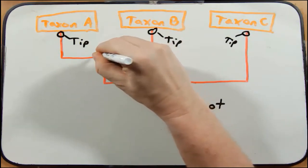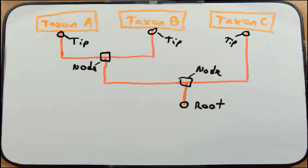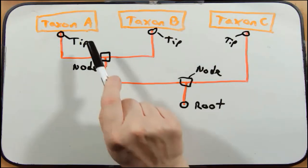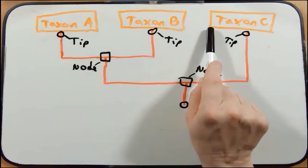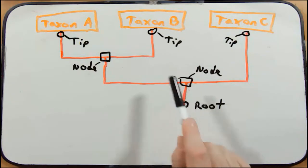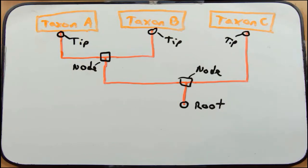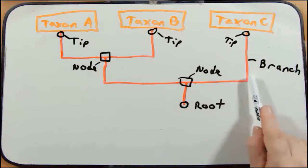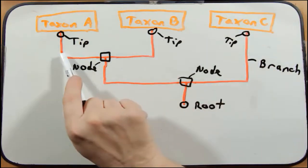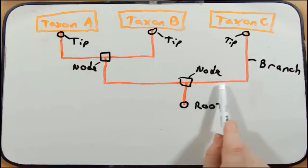The next term is node. A node represents the common ancestor of those descendants. This node here is the common ancestor of taxon A and taxon B — it is not the common ancestor of taxon C. This node here is the common ancestor of taxon A, taxon B, and taxon C. The last term is branch — any one of these vertical lines. These vertical lines represent a population through time, from a given point to the tip.